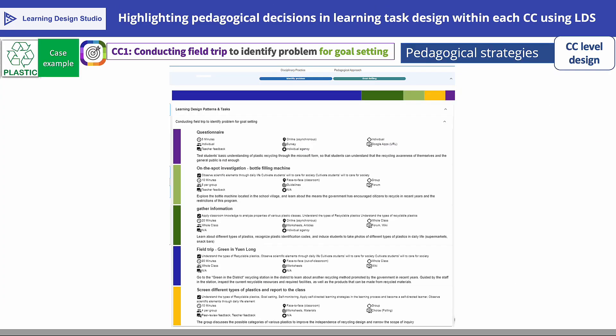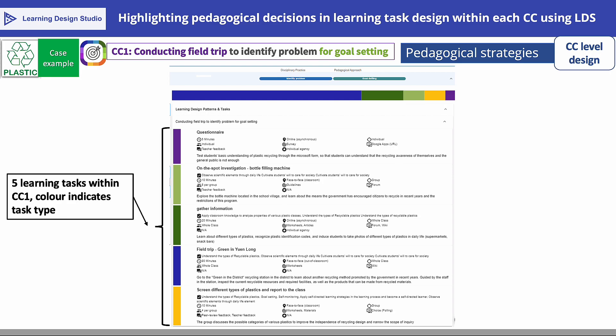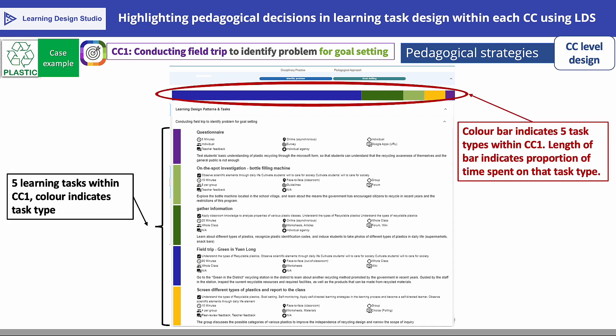CC1 of this example learning design consists of five learning tasks. The color bars on the left indicate the task type for each of the five tasks in this CC. The length of each color bar at the top represents the relative proportion of time that the student is expected to spend on this task type in this CC. According to this representation on LDS, students would be spending the least time on reflective learning and most time on directed learning in CC1.